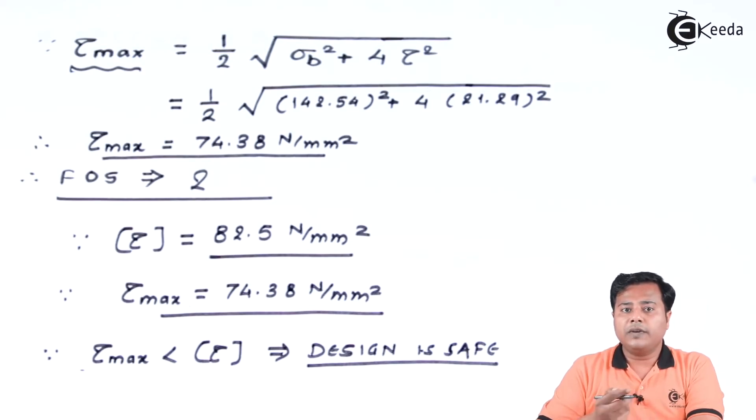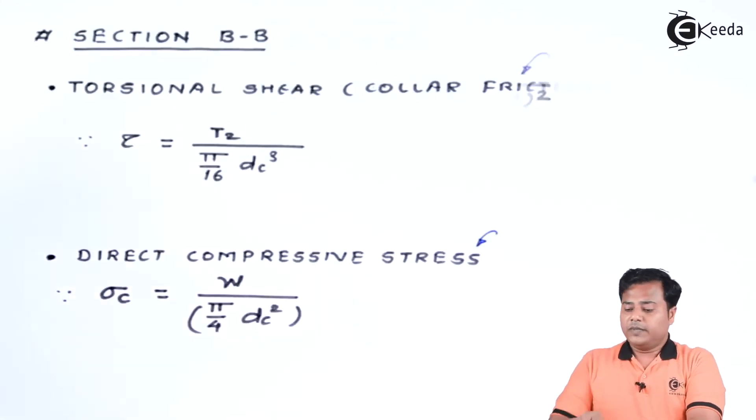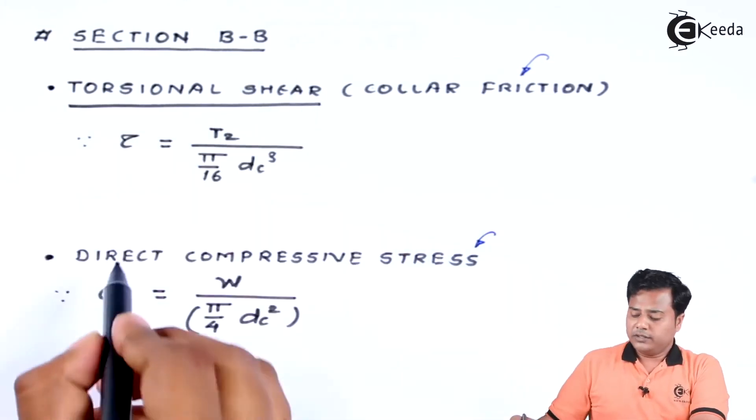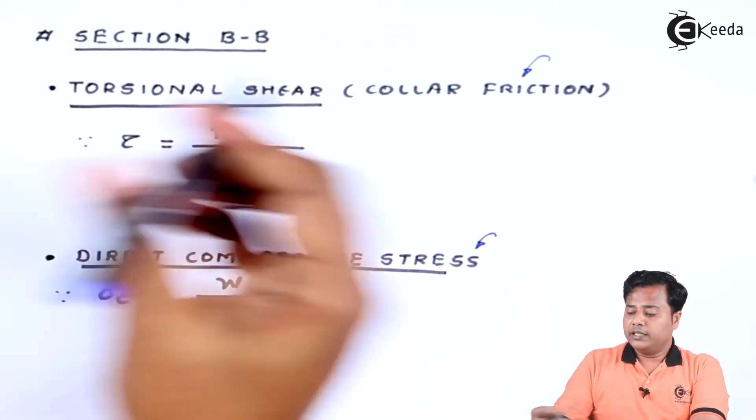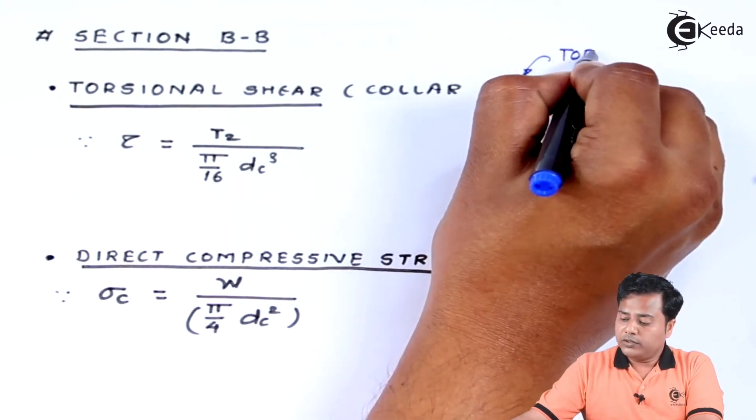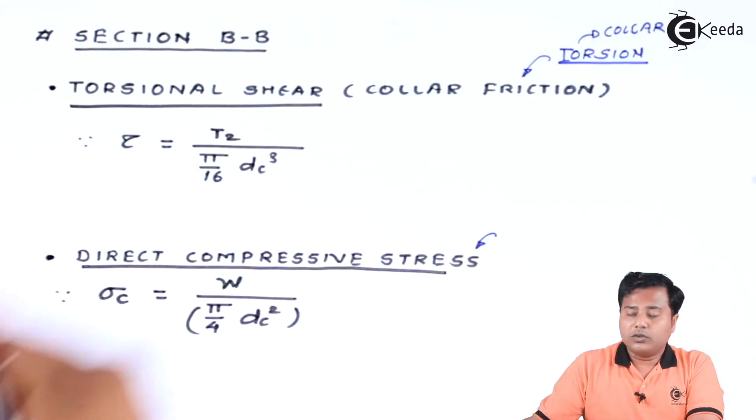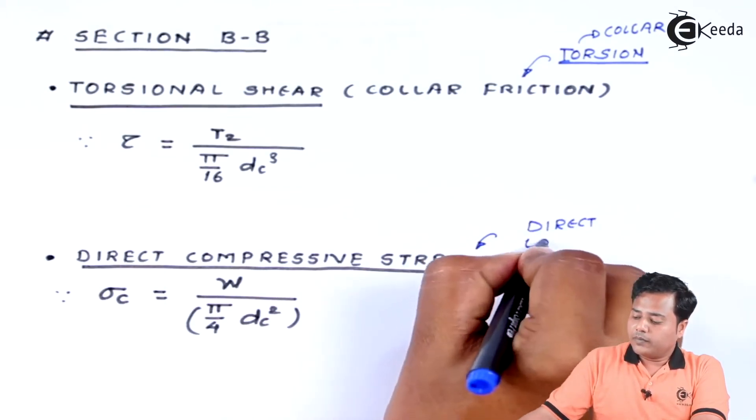Now we have to do this validation for cross section BB also. If that particular cross section fails, we have to come back and change the core diameter, and once we change the core diameter, all this formulation will also change. So let us move ahead for Section BB. At Section BB we know that there are two ways of failure: one is torsional shear and second is direct compressive stress. Now one more thing that I need to highlight is the collar friction is because of the torsion, or specifically collar torsion, and the direct compressive stress is because of the direct load.